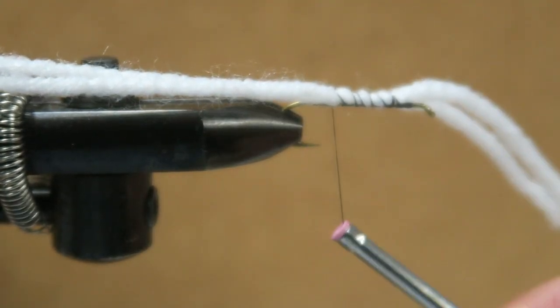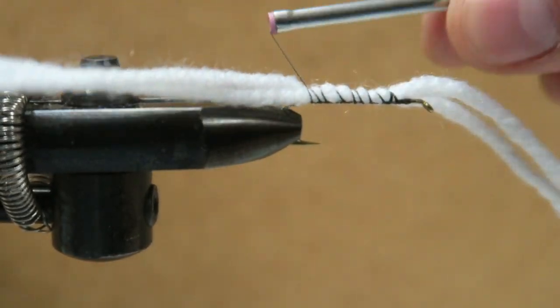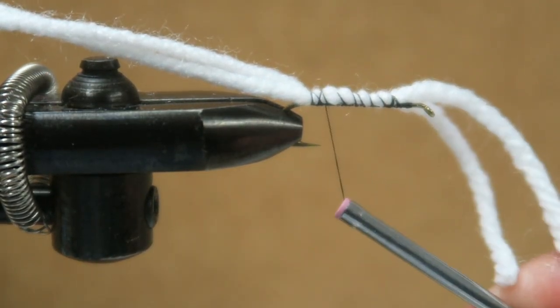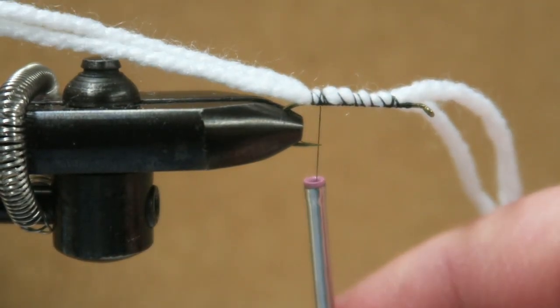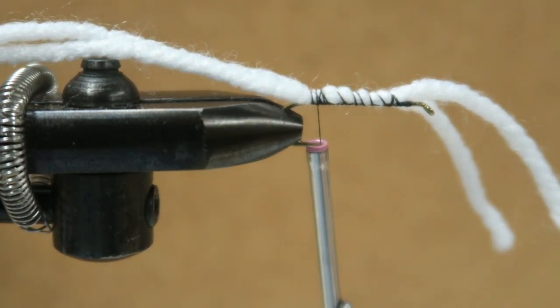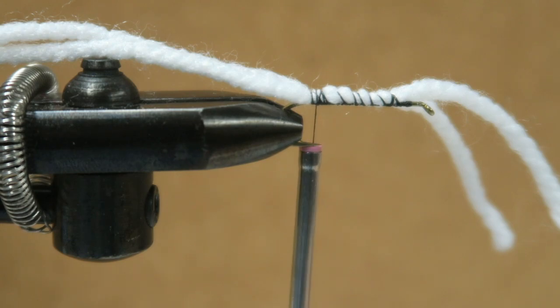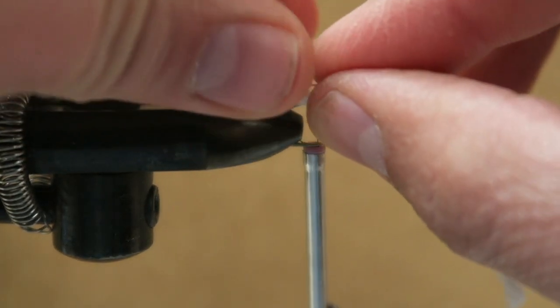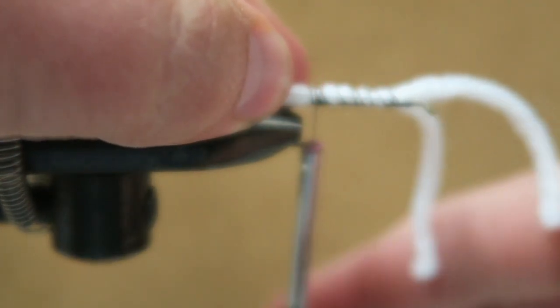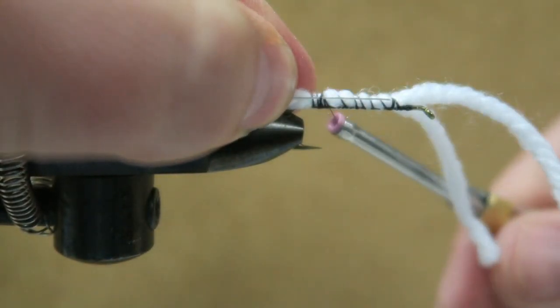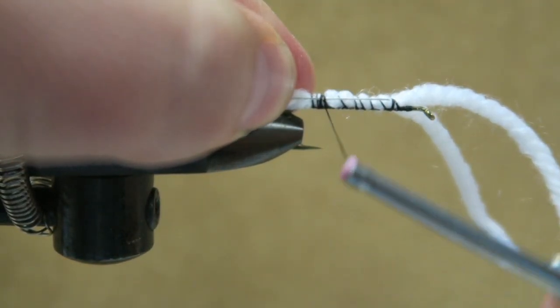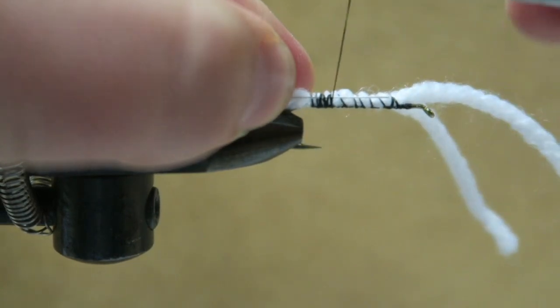This is a size 8 hook, a longer shank hook. Grab a piece of silver wire about five or six inches long, tie it in right here, and bind it down on your way up.